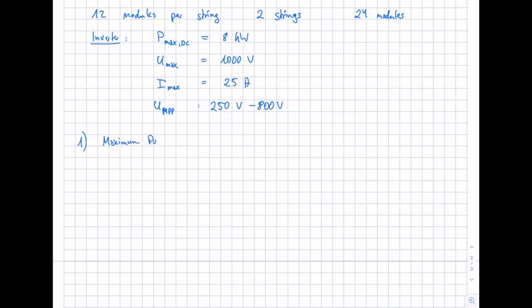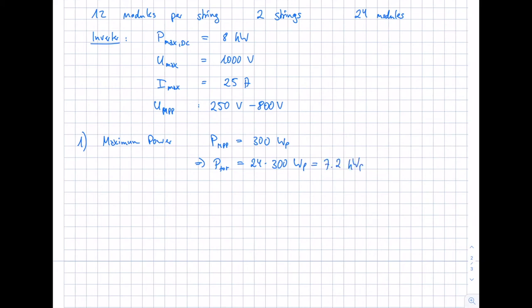Criterion one — maximum power: our module has an MPP power of 300 watts, and we have 24 modules total (12 per string, two strings). That gives us a total power of 24 times 300 watt peak, which equals 7.2 kilowatt peak. This is smaller than the inverter's P-max of 8 kilowatts, so criterion one is fulfilled.